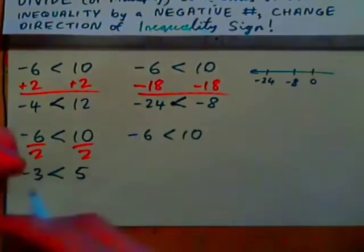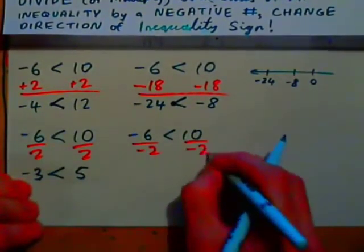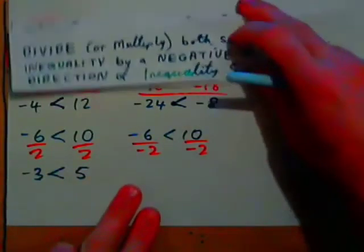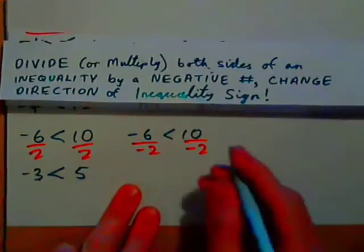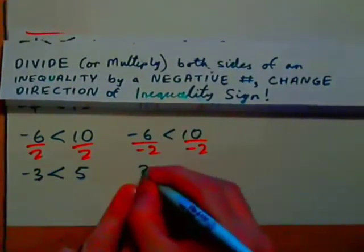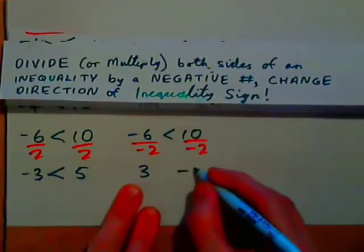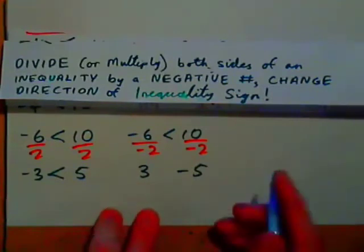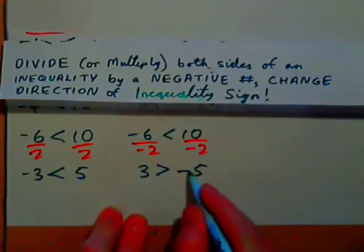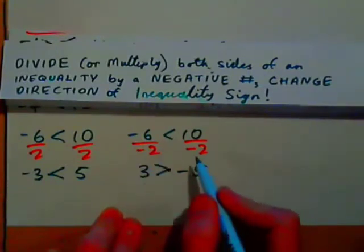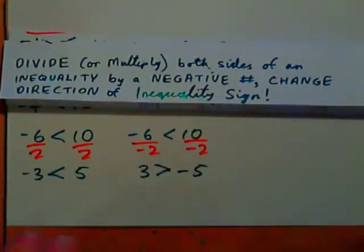Now divide both sides by negative 2. Negative 6 over negative 2 is positive 3. Positive 10 over negative 2 is negative 5. Which way should the sign go? Negative 5 is lesser than 3, so 3 is greater than negative 5. The sign has flipped! So when we divide both sides by a negative number, we need to change the direction of the inequality.